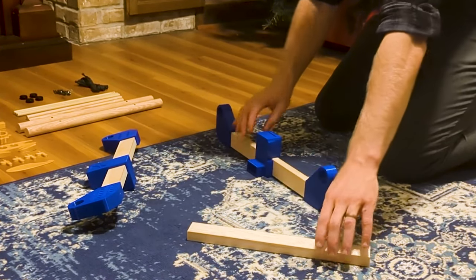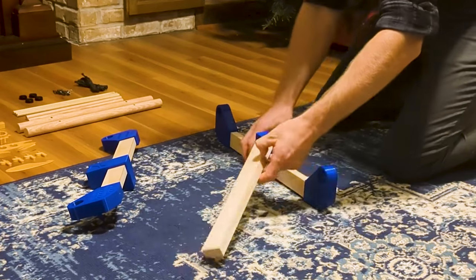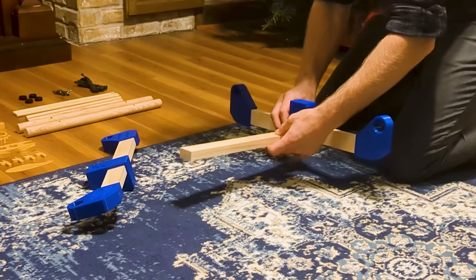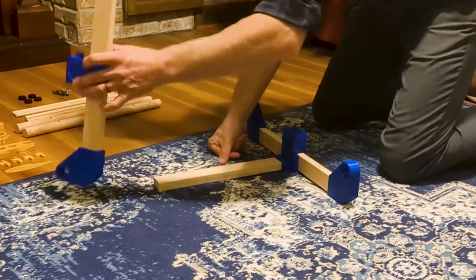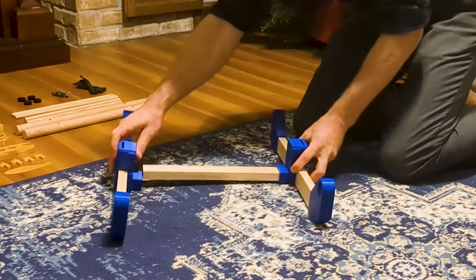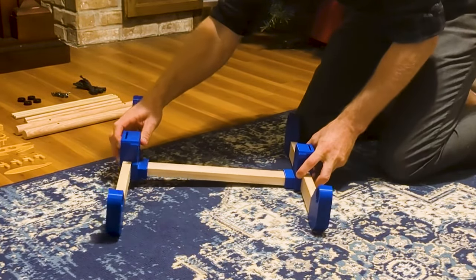From here, what we're going to do is take this middle piece and slide it into the middle part of the frame, and then we can attach both sides like so.